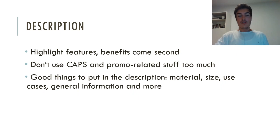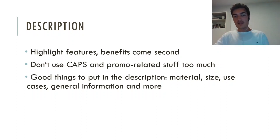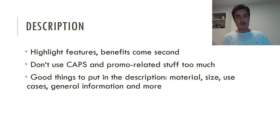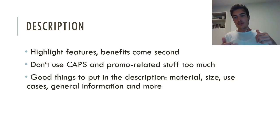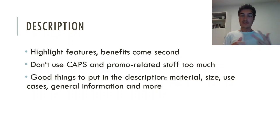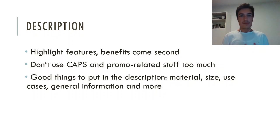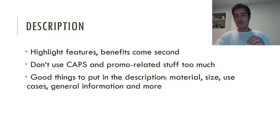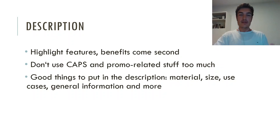Good things to put in the description are material, the size of a product for fashion or furniture items, the use cases — like with the anti-theft backpack, you can use it for your laptop when traveling or hiking — general information relevant to your product, and things like whether the product is waterproof, has a certain quality standard, uses special materials, or a special manufacturing process. What is important is that you keep things more feature-oriented than benefit-oriented so that people can compare your product against others and decide for themselves if it's right for them.